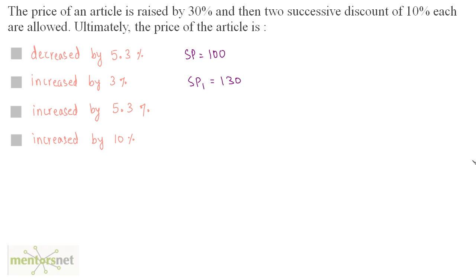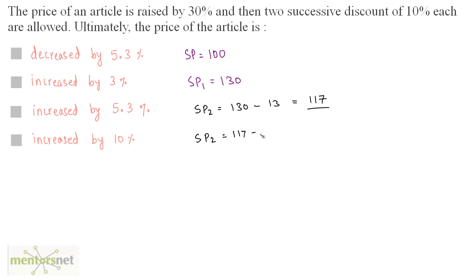Two successive discounts of 10% each are allowed on the new selling price of 130. The first 10% discount gives SP2 = 130 minus 10% of 130 = 130 minus 13 = 117. On 117, another 10% discount is applied: 117 minus 10% of 117 = 117 minus 11.7 = 105.3.